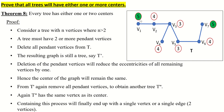V1 has eccentricity 5, V2 is 4, V4 is 4, V3 is 4. The minimum eccentricity is V3 and V5, because that eccentricity is 3. The other eccentricities are 4 and 5. So the minimum eccentricity vertices are V3 and V5.